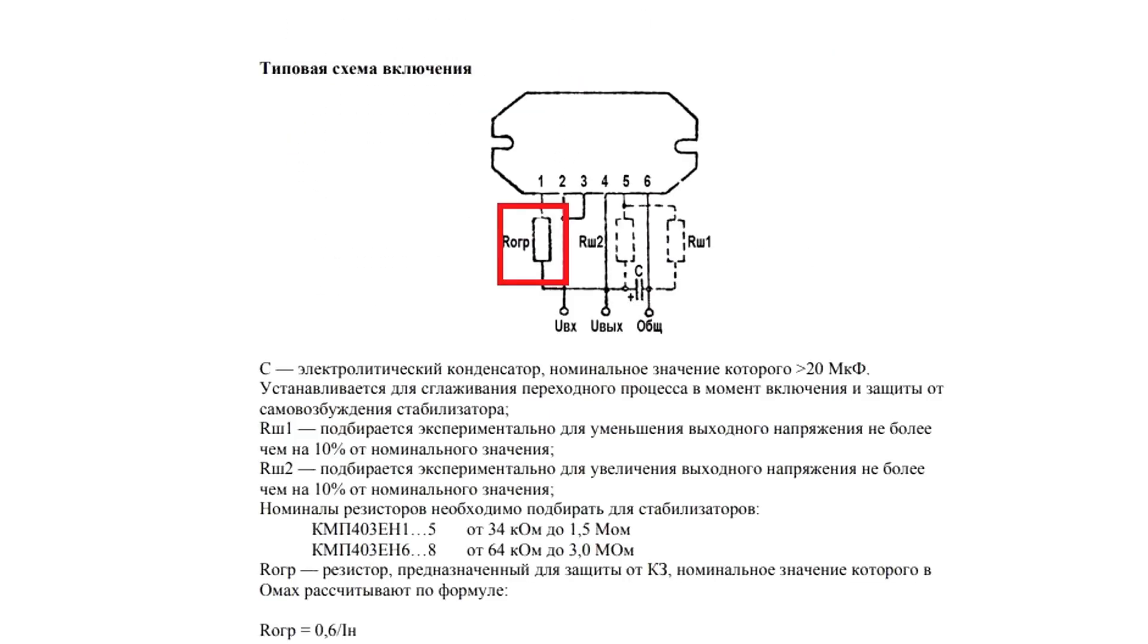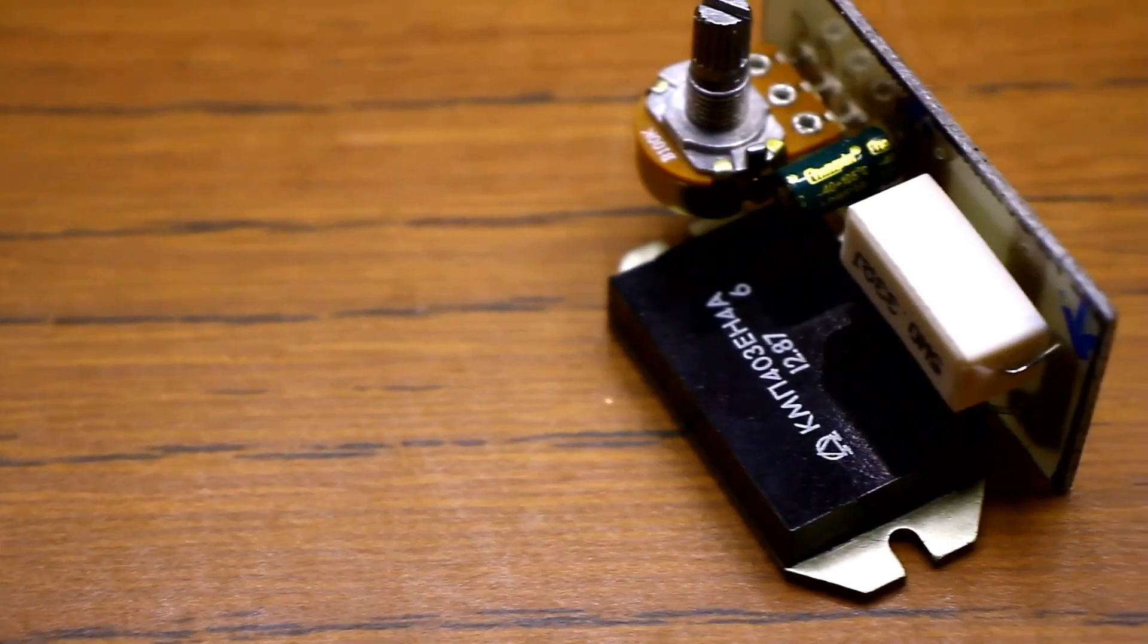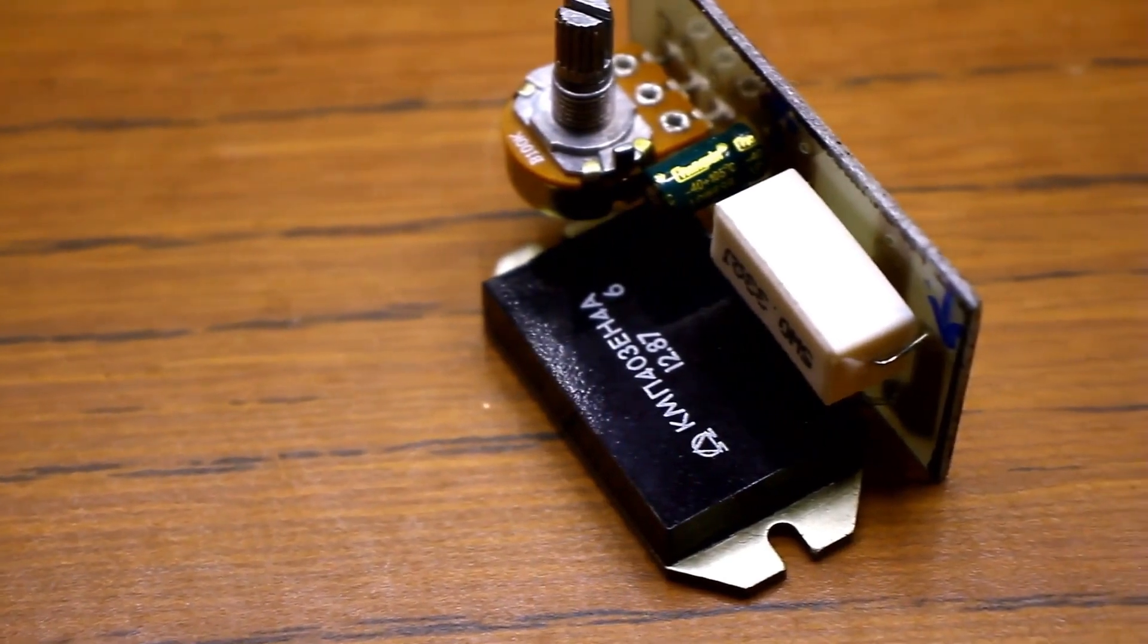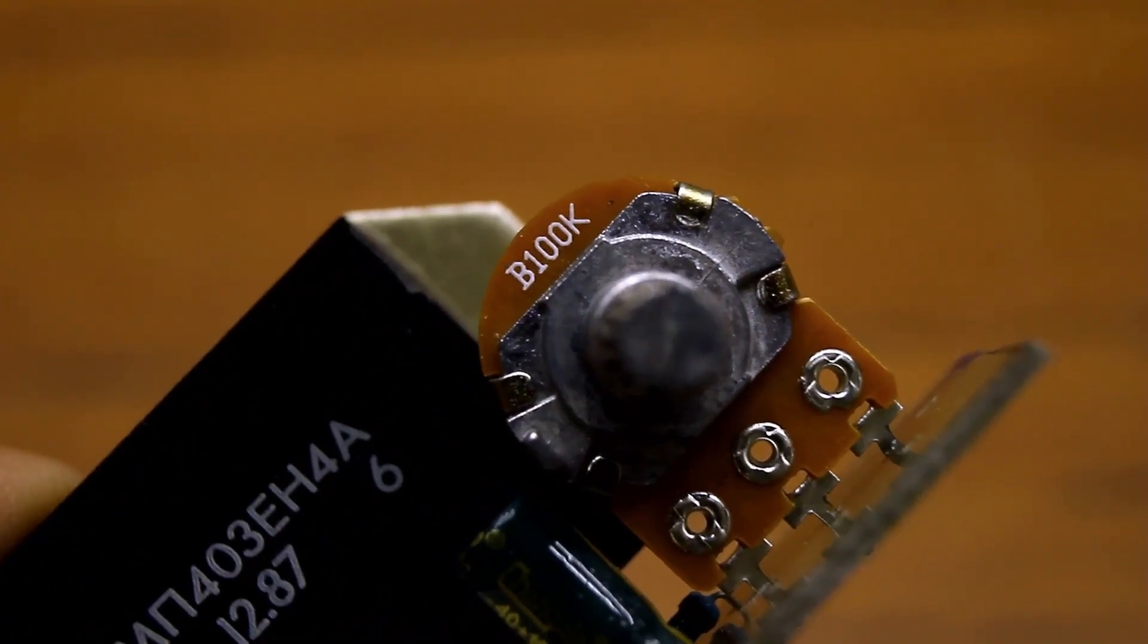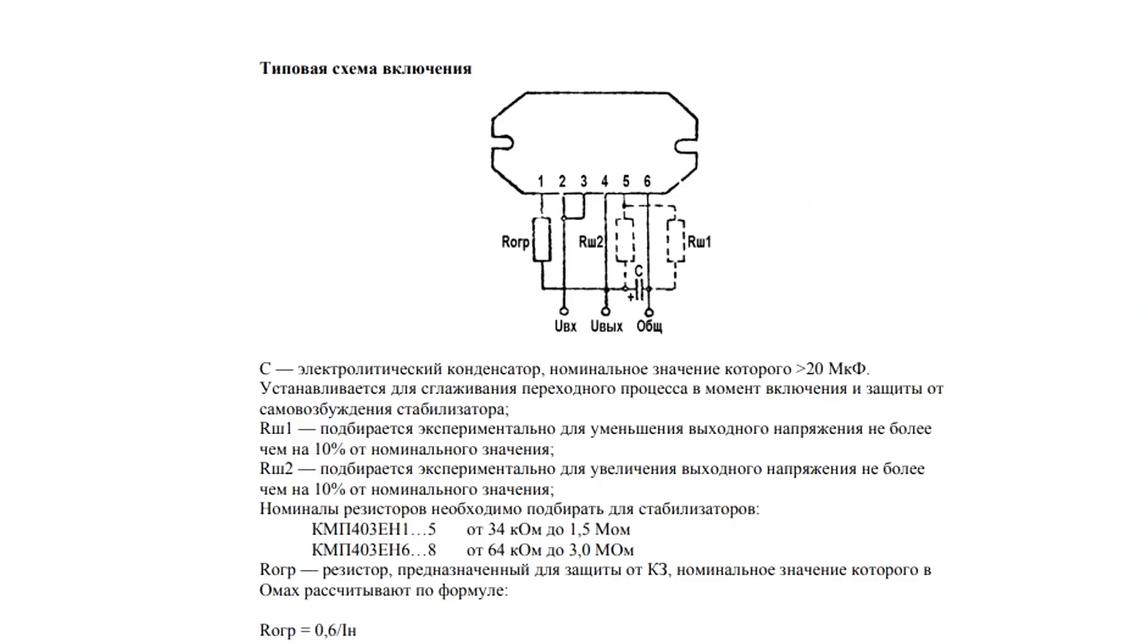There are many connection schemes. Here, you can adjust the protection current by selecting the appropriate resistor and change the output voltage in either direction. I will assemble a circuit with protection and the ability to adjust the output voltage by replacing the specified resistor with a variable one.